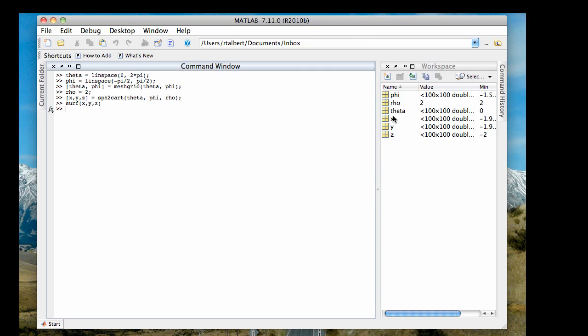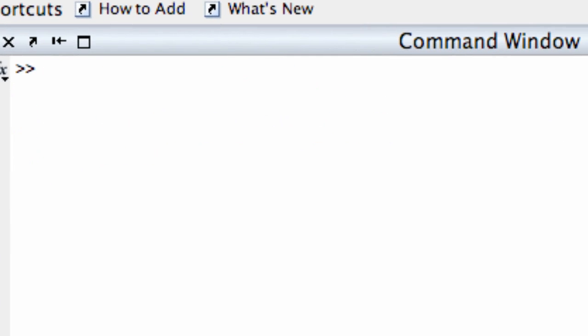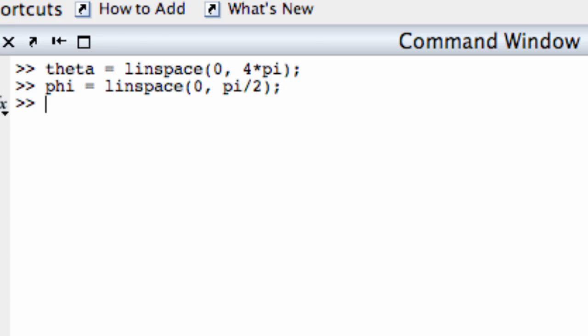We're going to let theta go from 0 to 4 pi. Let's go ahead and start entering this. First of all, CLC will clear the screen. I'm going to let theta go from 0 to 4 pi. A little unusual value for theta, but you'll see why in a minute. I'm going to let phi go from 0 to pi over 2.